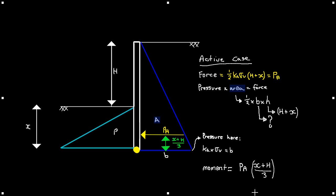I'm not going to go through it, but hopefully you can see the same if you tried to work out the formulas due to the passive force and the formula for the passive moments. So here they are, Pp equals a half Kp times sigma v times x. And then our passive moment is equal to Pp times x divided by 3.